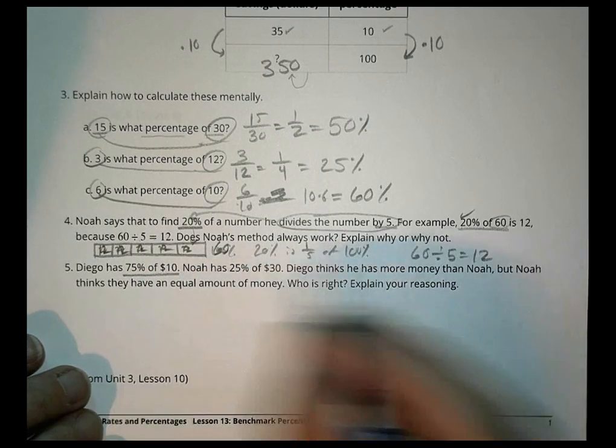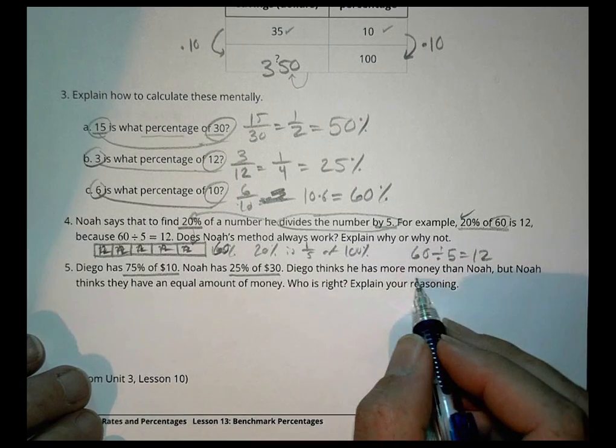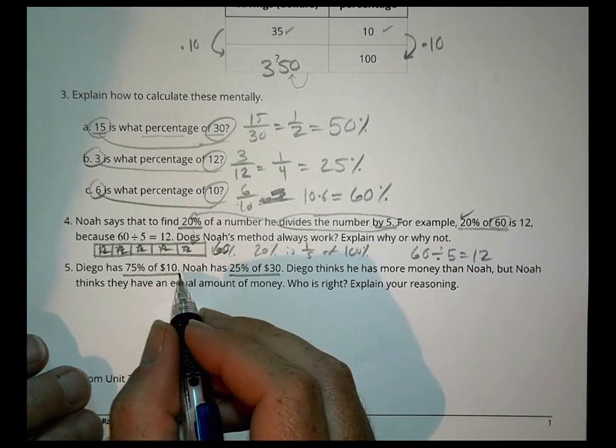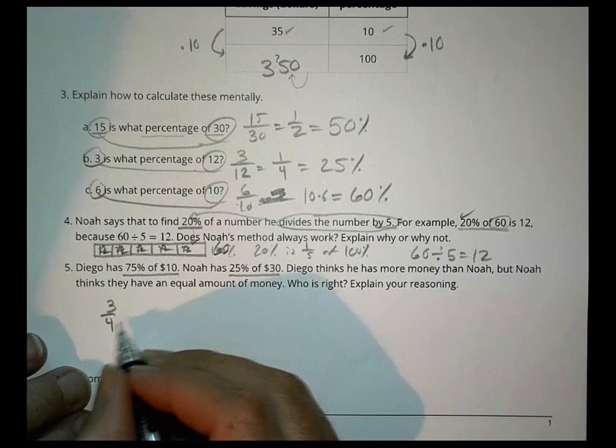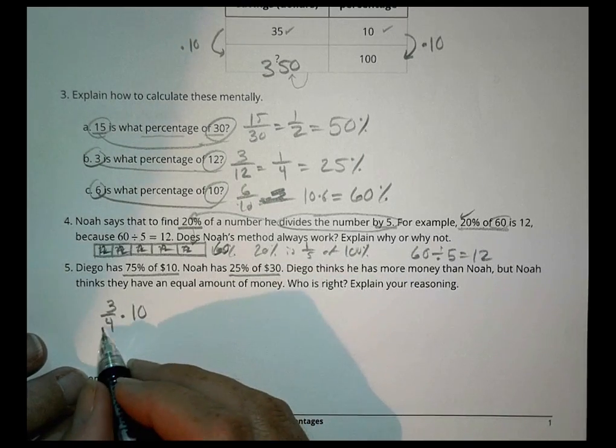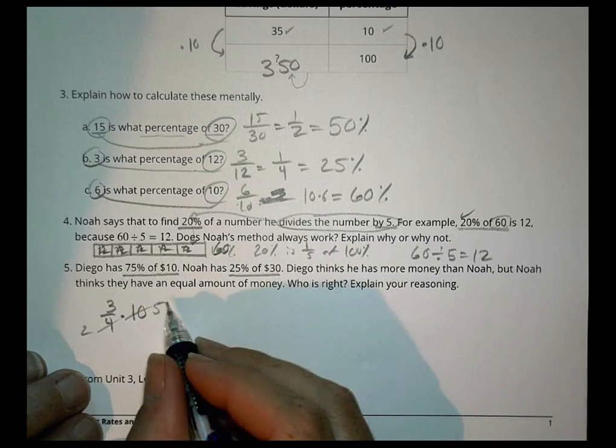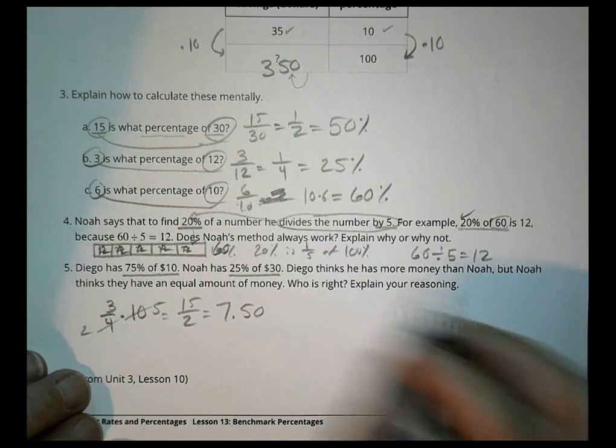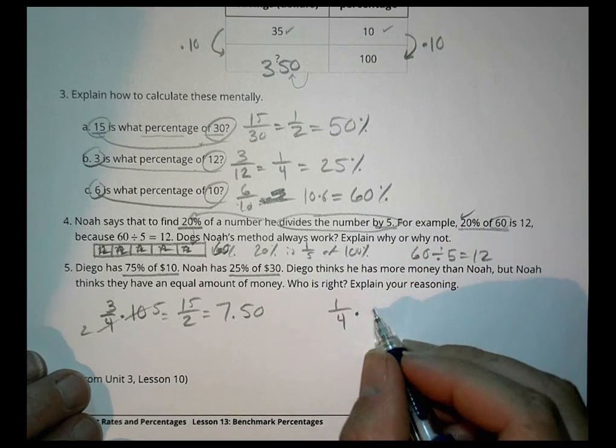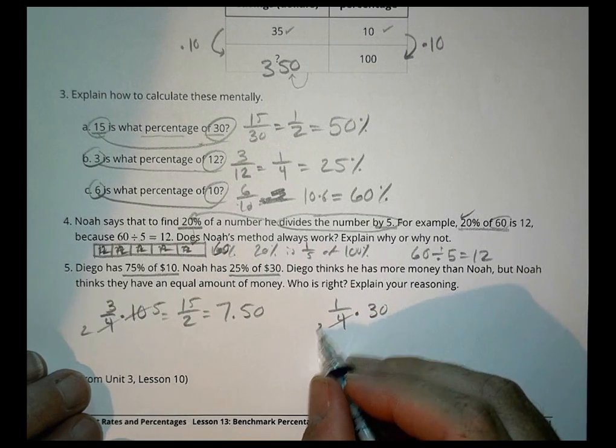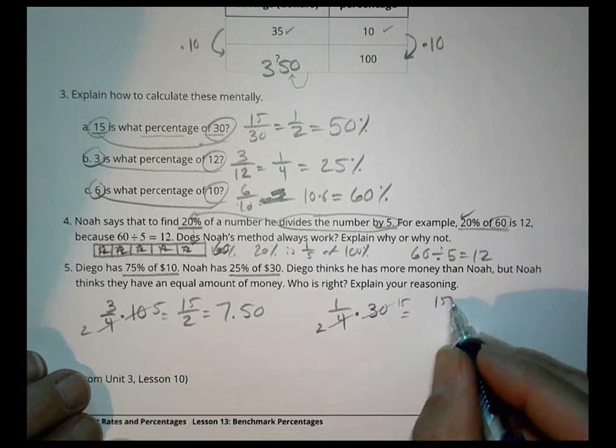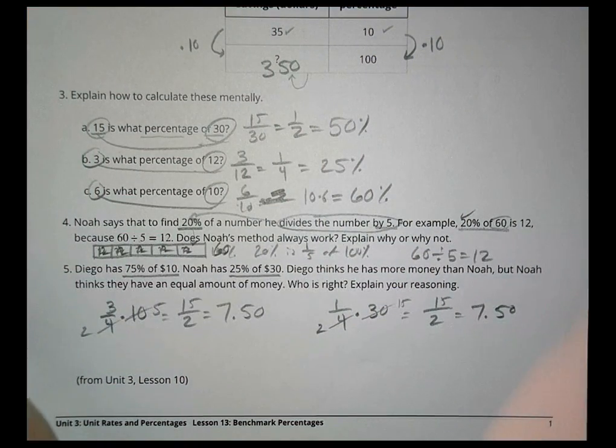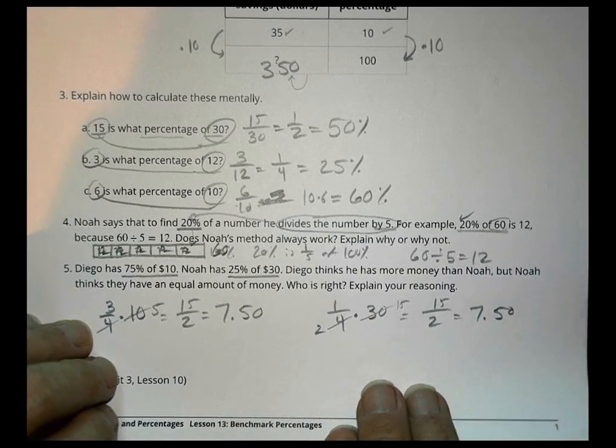Diego has 75% of $10, Noah has 25% of $30. Diego thinks he has more money than Noah but Noah thinks they have an equal amount of money. Who is right? So Diego has 75% which is 3 fourths of $10, so we can do 3 times 10 over 4, which is 15 over 2, and 15 divided by 2 is 7.5 or $7.50. For Noah he has 25% or 1 fourth of 30, and that's also 7.5. So what do we see? They actually have the same amount of money. 75% of 10 is $7.50 and 25% of 30 is also $7.50.